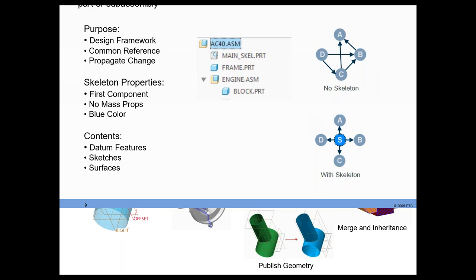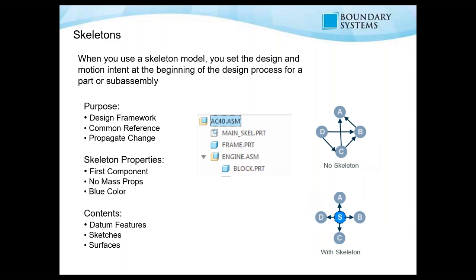Let's discuss skeleton models. When you use a skeleton model, you set the design and motion intent at the beginning of the design process for parts or assemblies. These skeleton models will basically shape your whole assembly — they create the design framework for you. You use them as a common reference, so you can create datum planes, datum points, surfaces, extrudes, things like that. You can create all of those things in this skeleton model.